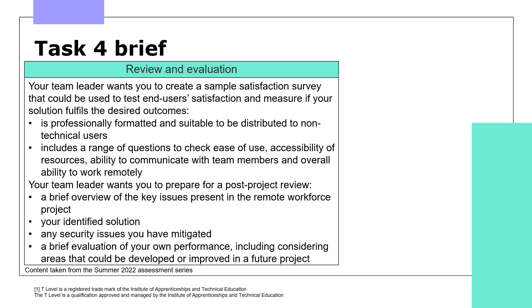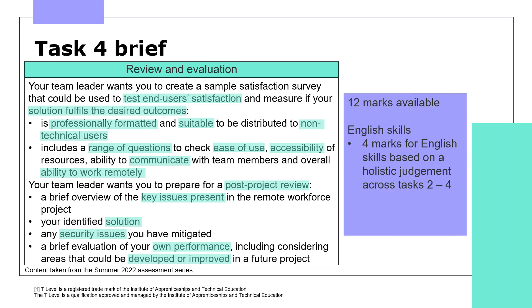Task 4 is an evaluation worth 12 marks in total, but the use of English is also marked holistically with its own marking scheme. The examiners will award a maximum of 4 marks for English skills, based on the student's performance across Tasks 2, 3, and 4. Those marks are distributed over two activities: a satisfaction survey designed to review the solution the students put in place, and an evaluation in the form of a project review.